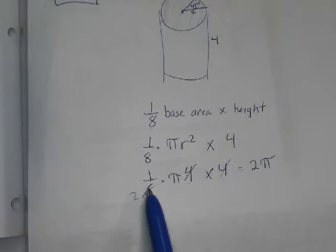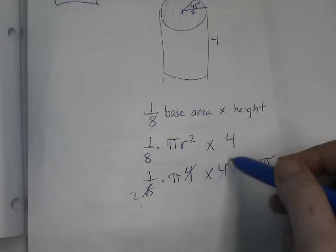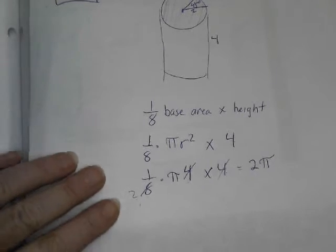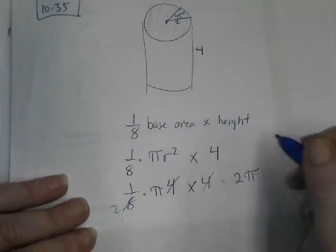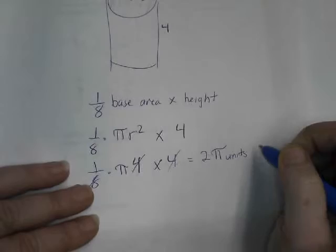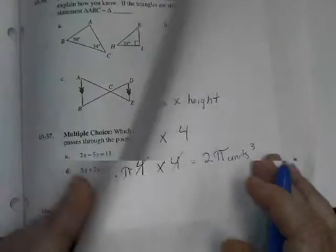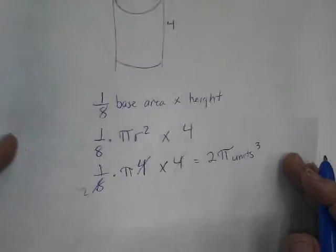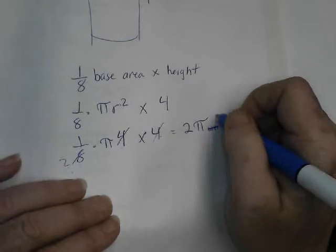Yeah, because that would cancel out, and then I'd have a two here, and that's 2π. So 2π equals V, the volume. And we could say units cubed. Oh, are they feet? Yes, they are. So I need to write feet cubed.